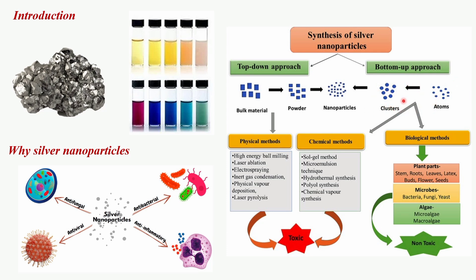In the bottom-up approach, nanoparticles are built up from atomic or molecular precursors. This method involves chemical processes where silver ions (Ag⁺) are reduced to form silver nanoparticles. Common techniques include chemical reduction — where silver ions are reduced using reducing agents such as sodium borohydride or citrate — the sol-gel process, which involves the transition of a solution into a gel followed by drying and heat treatment, as well as hydrothermal synthesis and chemical vapor deposition.